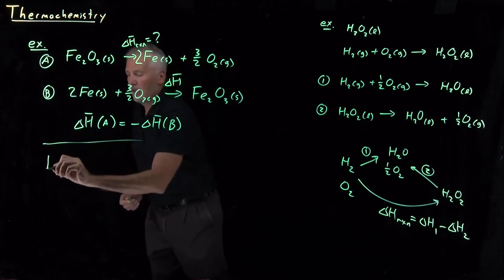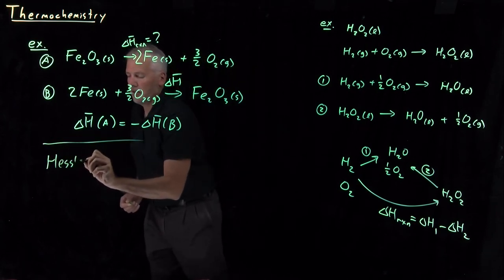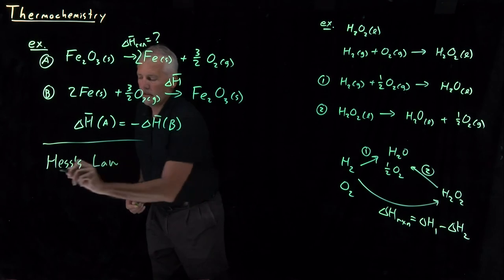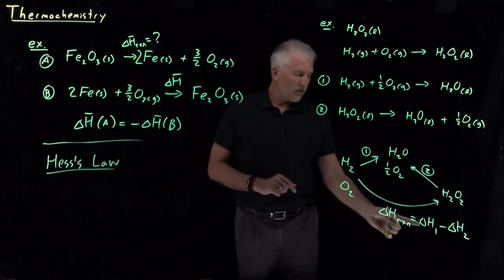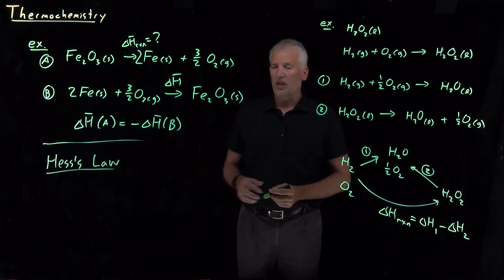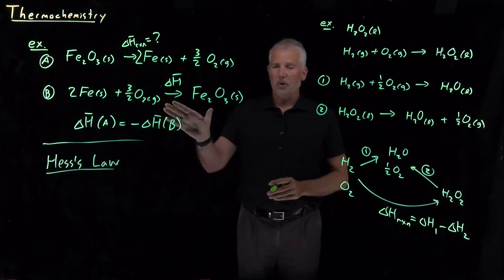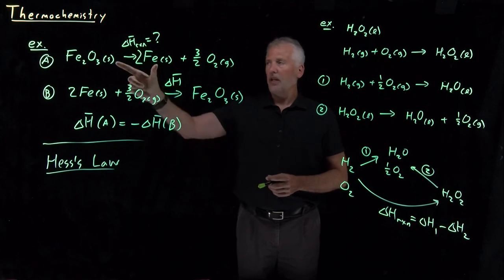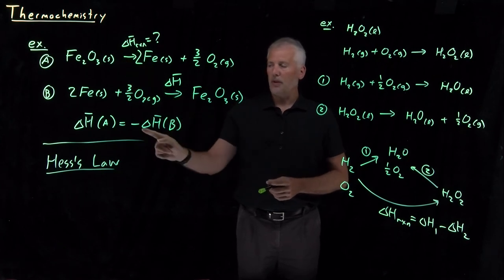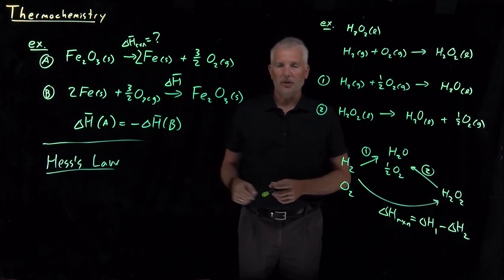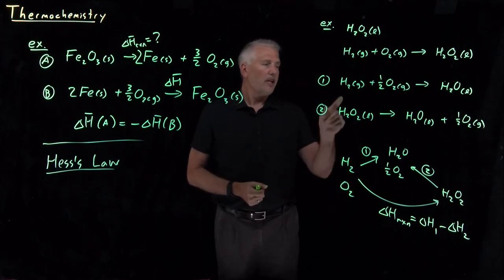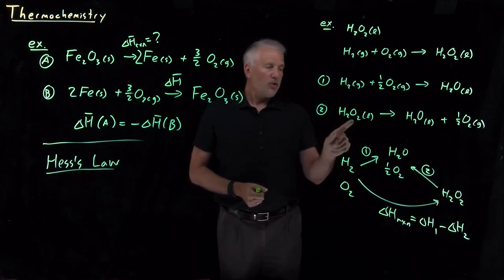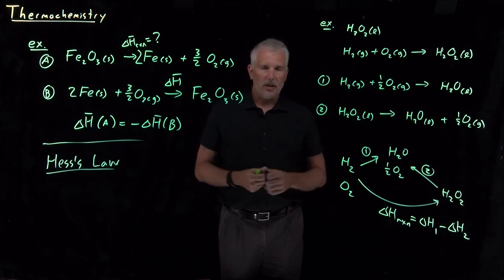Anytime we do something like this, what we've used is Hess's law, which says that we can treat chemical reactions essentially algebraically. If I turn a reaction around backwards, I just flip the sign of the delta H, or indeed the delta U if I'm using energies instead of enthalpies. If I add two reactions together, then I add their enthalpies together.